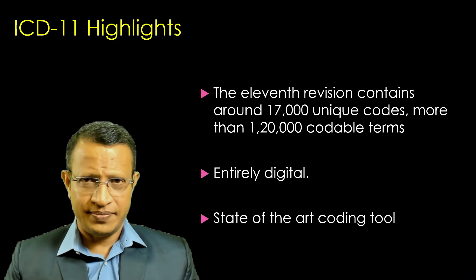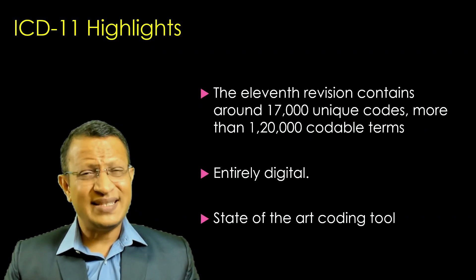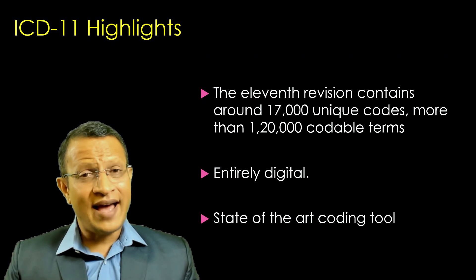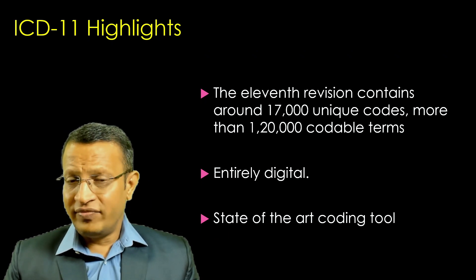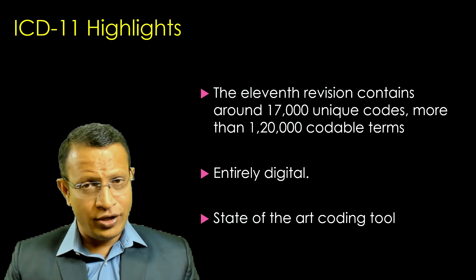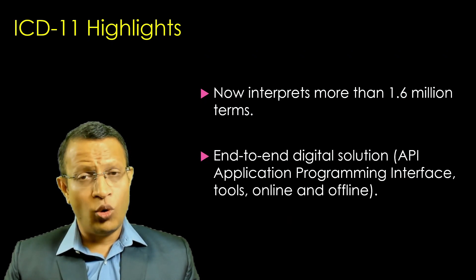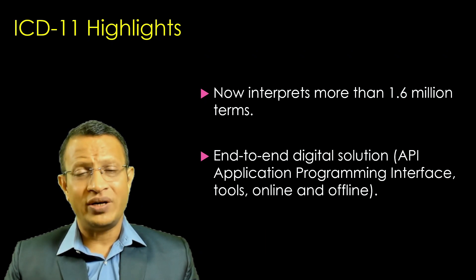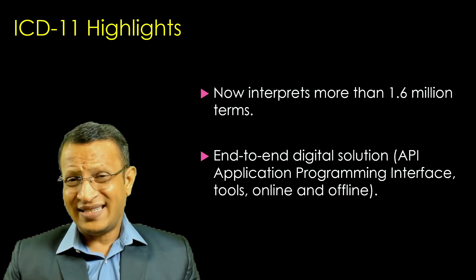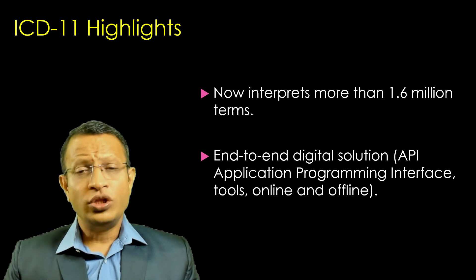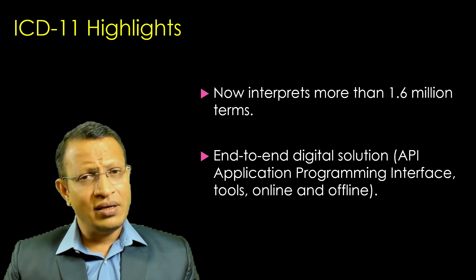Let us look into the ICD-11 highlights. This 11th revision contains 17,000 unique codes and more than 1,20,000 codable terms. It is entirely digital — ICD-11 is going digital. State-of-the-art coding tools have been introduced, and it interprets more than 1.6 million terms. That means if you make a diagnosis, with precision you will be able to communicate it to the other part of the world — for example, schizophrenia, whether severe, moderate, or treatment resistant. Such clear-cut terms have been introduced in ICD-11.